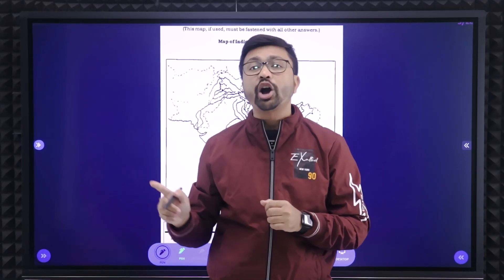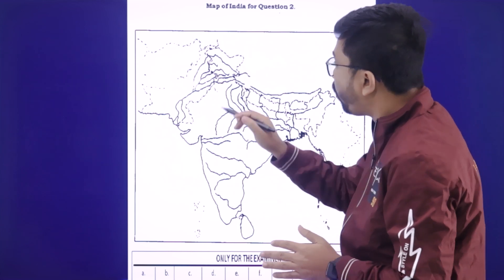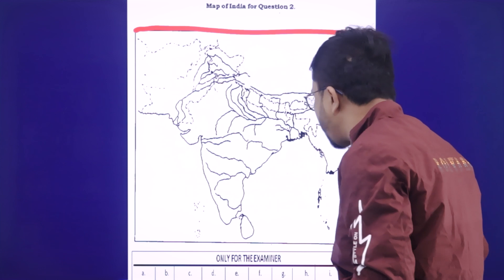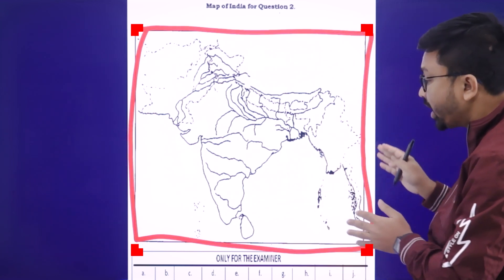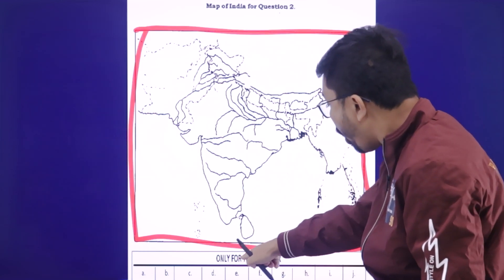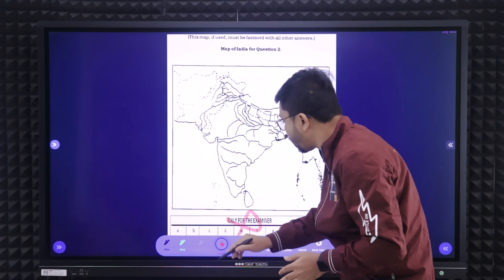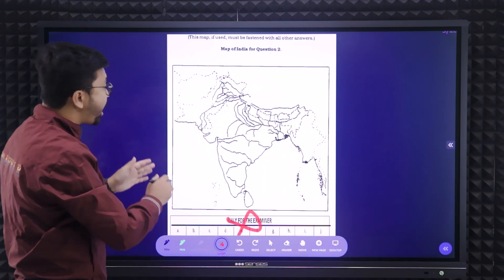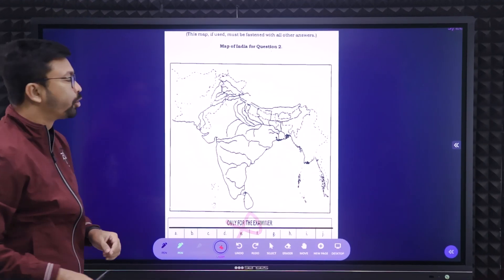You will not get any alternatives if you make any mistake, so you need to be very, very careful. Once you get the map page, make sure that everything you do — labeling, marking — you have to do within this box only. This box is for you. Remember, the portion written below is only for the examiner; you should not touch that portion at all. So everything you have to mark will be within the Indian map and within the boundary.